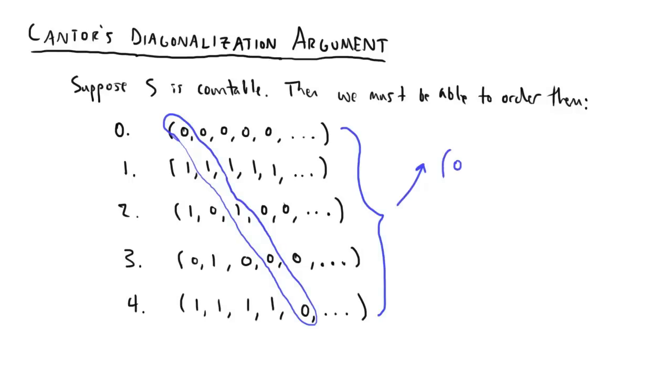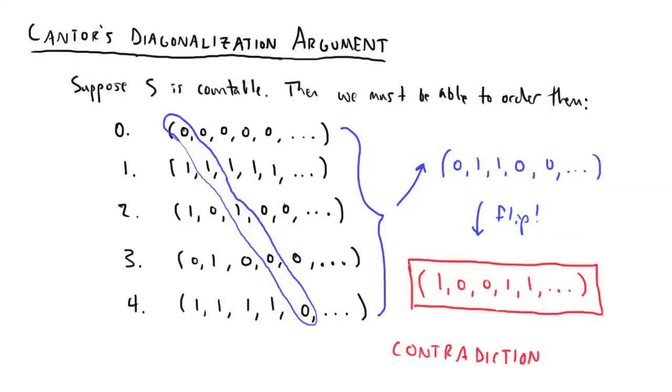Now, flip the numbers so that 0 is 1 and 1 is 0, and we get a sequence which has at least one position which is different from every other sequence in the ordering, but we claim that every element of S is in here, and this is definitely an element of S. Thus, we have a contradiction, and S is uncountable.